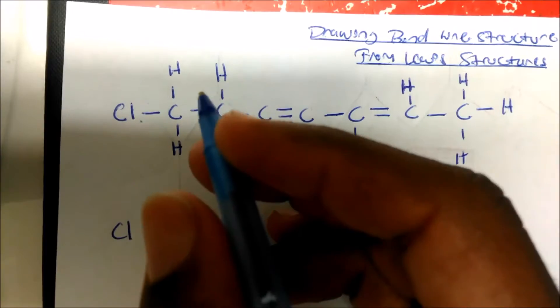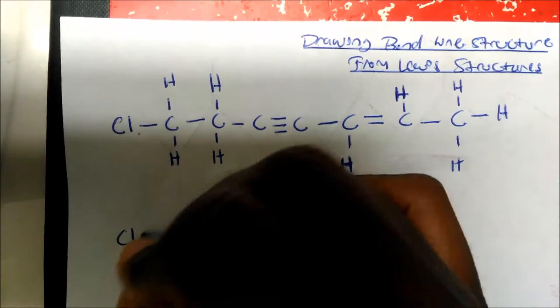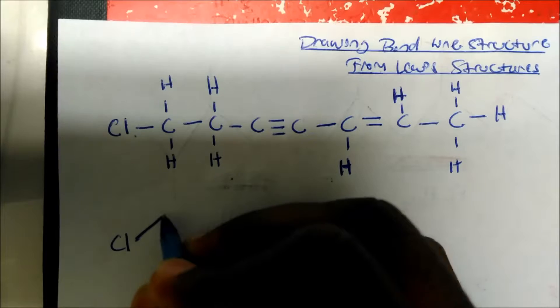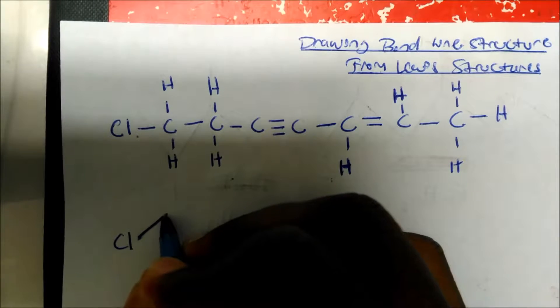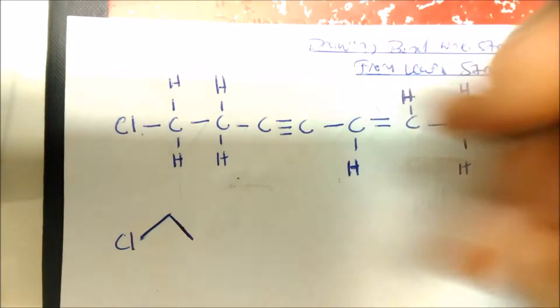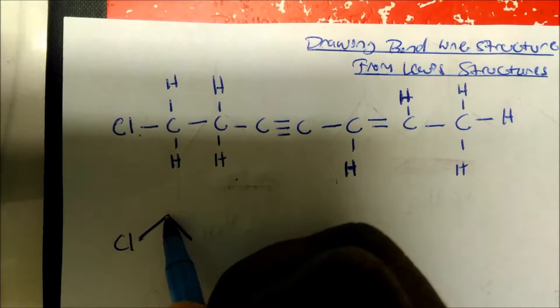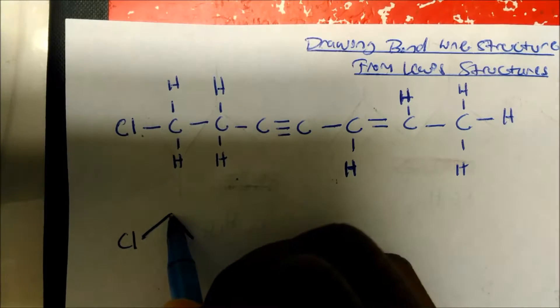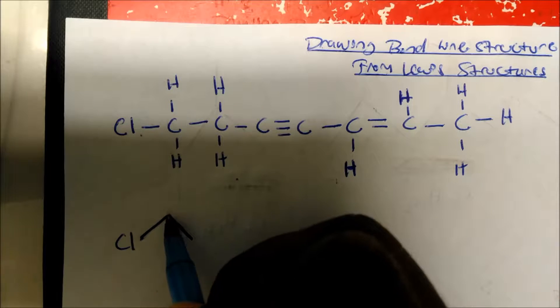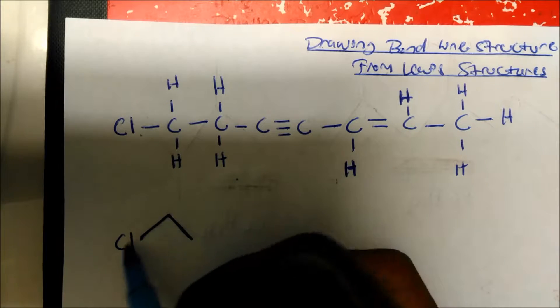This chlorine is bonded to a CH, so I'm gonna draw a line like this. There's a carbon. Now think about it — if I make something like this, I would have a carbon here that will be bonded to two CH's. So this whole thing right here — we've already taken care of this part.